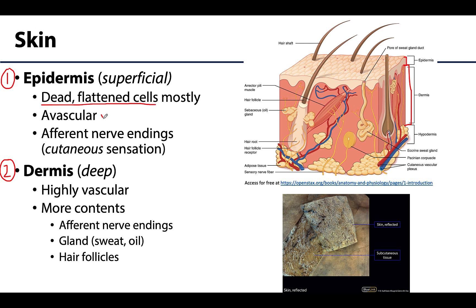The epidermis is avascular, meaning there are no blood vessels present to provide oxygen and nutrients to this layer — which isn't a big deal since most of the cells are dead and it's not really needed. The deepest epidermal cells that are alive and regenerative are nourished by the deeper vascularized dermis. The fact that the epidermis is avascular means that if a cut occurs only at the epidermis, there will be no bleeding.